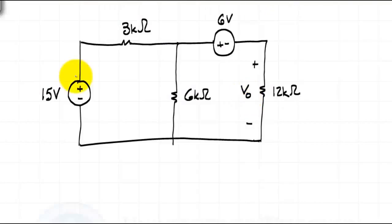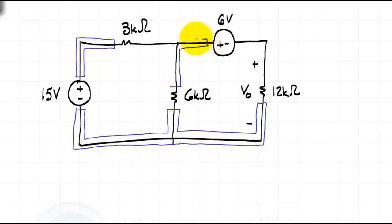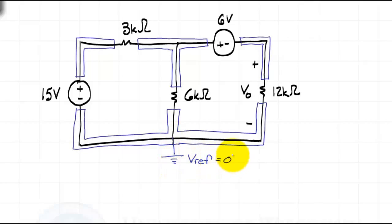Another situation we may encounter is having two or more voltage sources in a circuit with at least one of them not connected to a reference node. This circuit is an example of that. Let's make the goal of this problem to determine V sub O. We'll begin the same way, by outlining the nodes to make them easy to identify, then assign a reference node. Whenever there are voltage sources in a circuit, it is helpful to assign the reference node so that it is connected to at least one of the voltage sources, as it reduces the number of unknown node voltages.